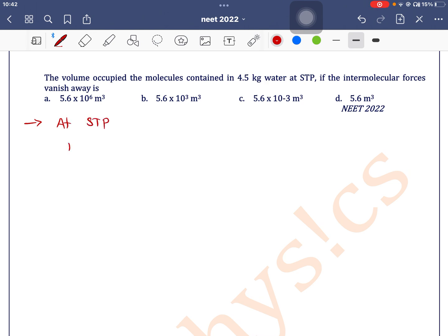STP means temperature is 273 Kelvin and pressure is how much? 1 atm, that is 10 to the power 5 Pascal. Now we can find number of moles here, that is